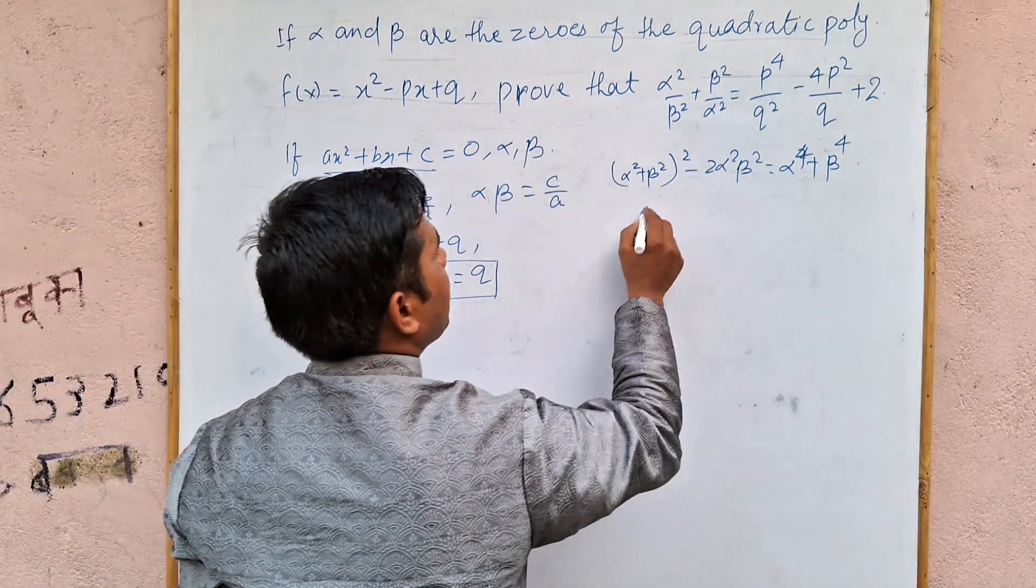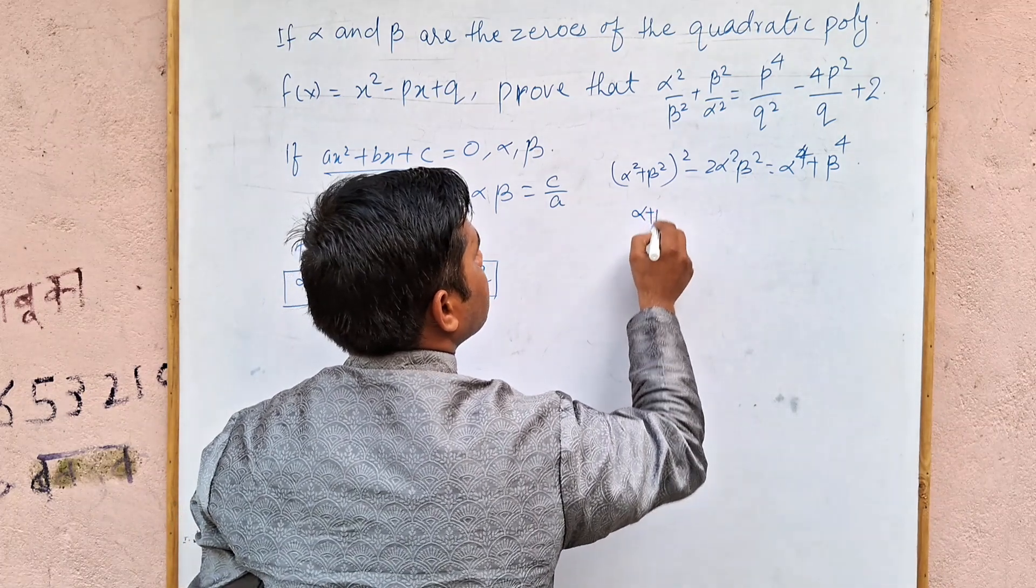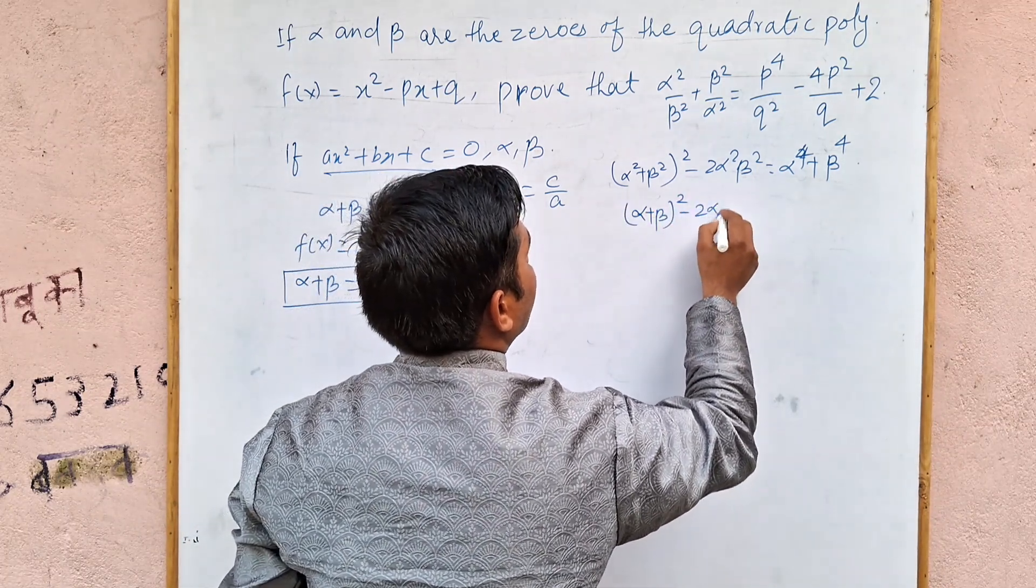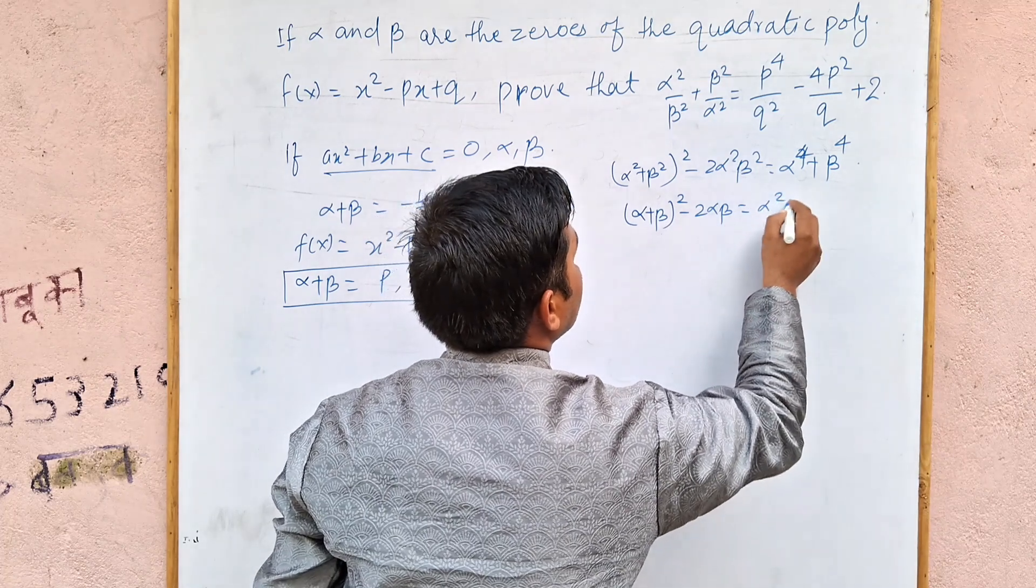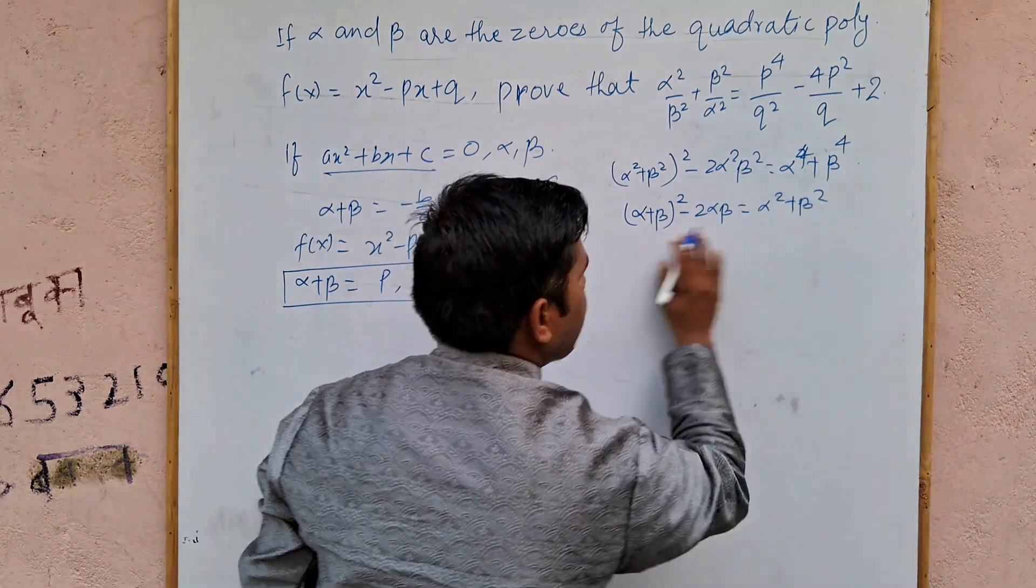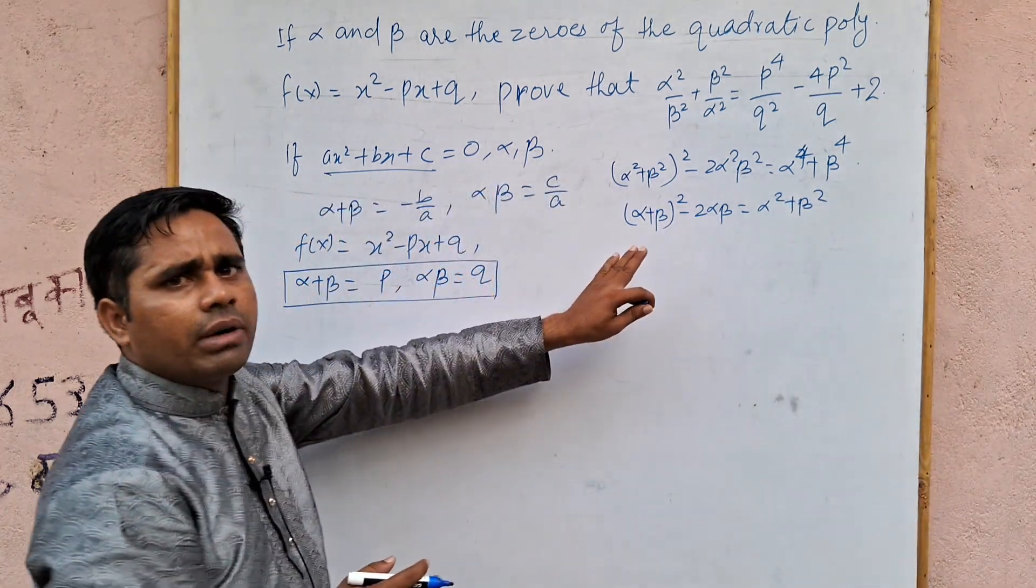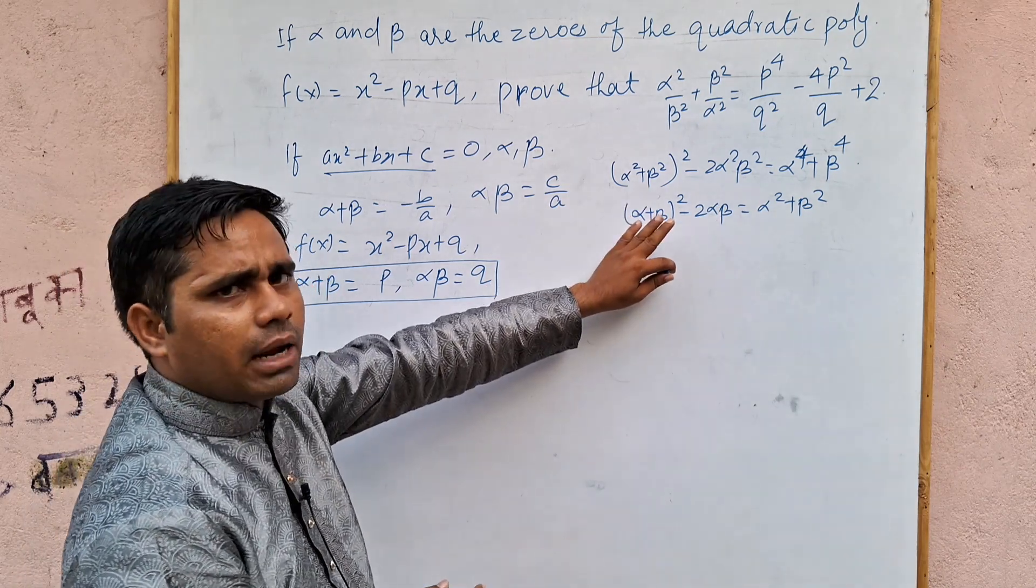Identity to apply to this one. Alpha plus beta whole square minus 2 alpha beta is equal to alpha square plus beta square. This identity is a plus b square minus 2ab.